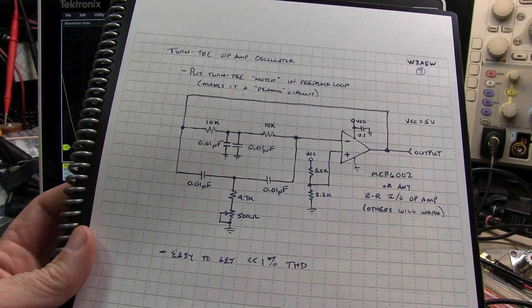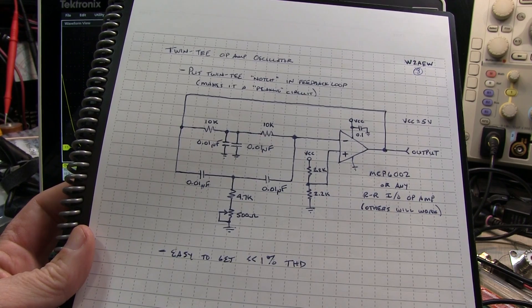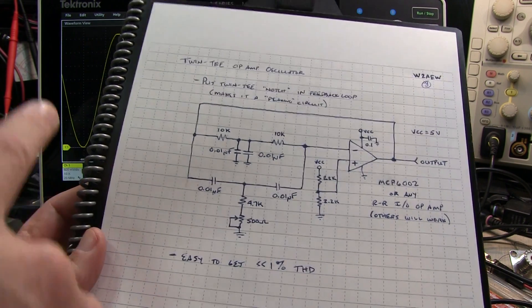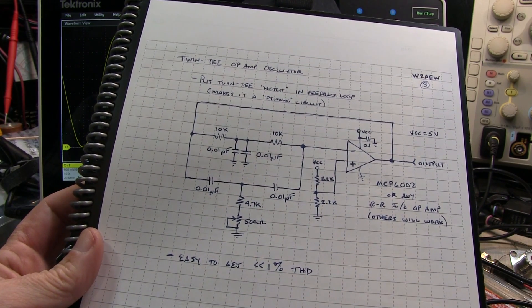One of the things we talked about was how you can get a good low distortion sine wave, and we looked at it a couple of ways, one with an FFT on the scope and then also with a THD multimeter.